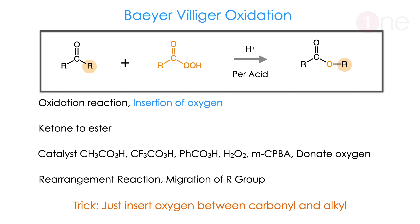First, let us see what Baeyer-Villiger oxidation is. It is simply an oxidation reaction. If you take a ketone, there will be an insertion of oxygen, so the ketone will be converted into an ester. The catalyst is a peracid — the peracid donates oxygen. The catalyst can be peracid, perfluoroacetic acid, benzoic peracid, simple peroxide, or meta-chlorobenzoic acid (mCPBA).